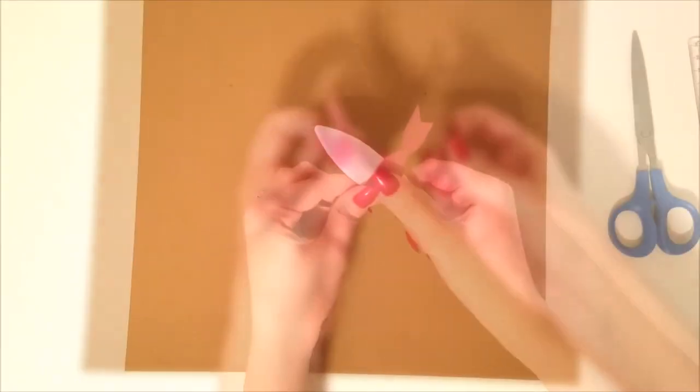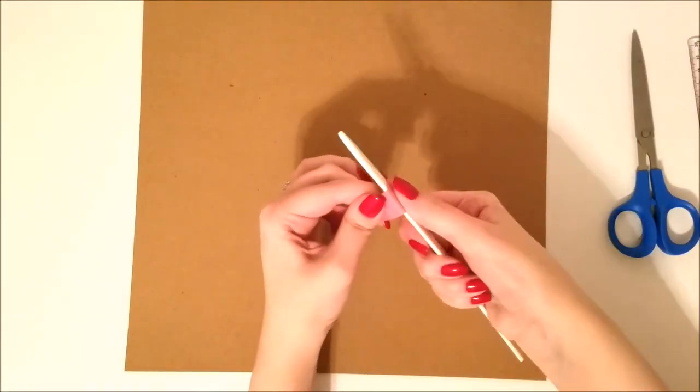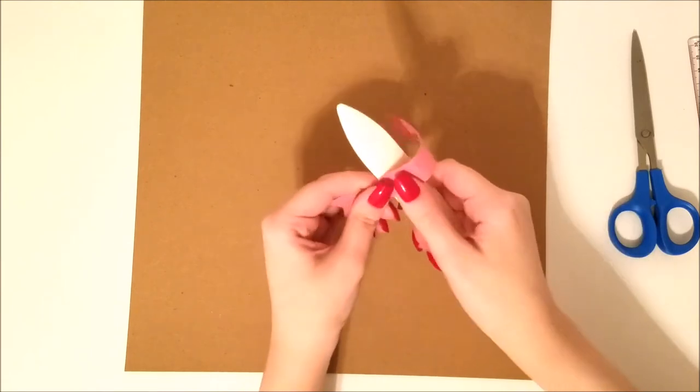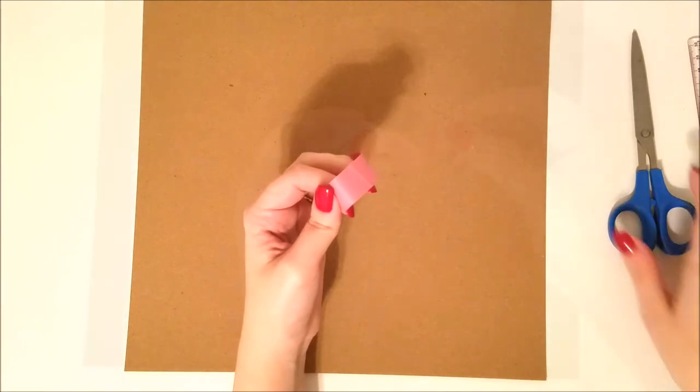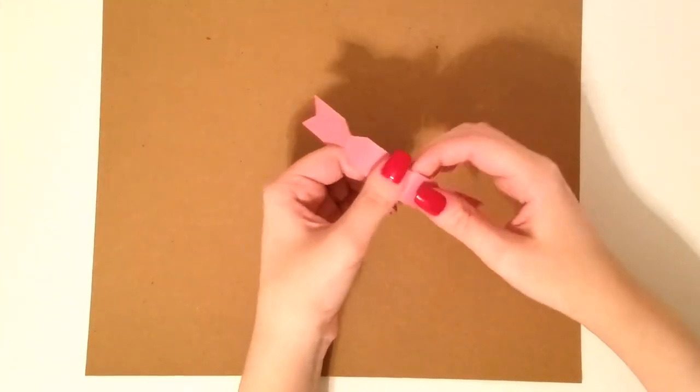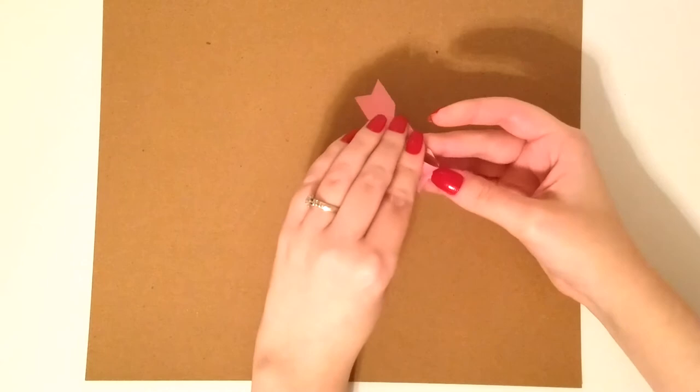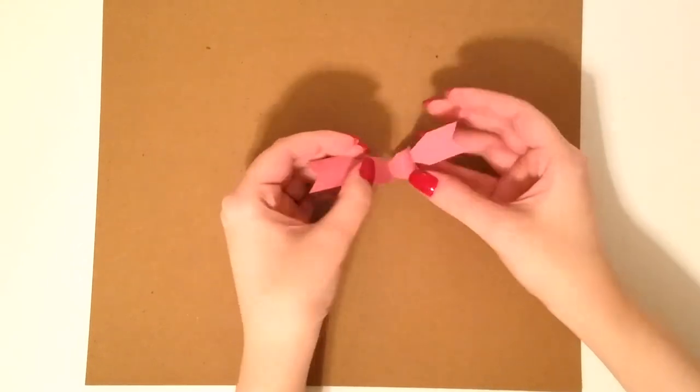Now after you do this, you just want to take your bone folder and kind of curl the paper so it'll form into the shape of the bow. And then you can go ahead and just fold back the little tail of the bow.